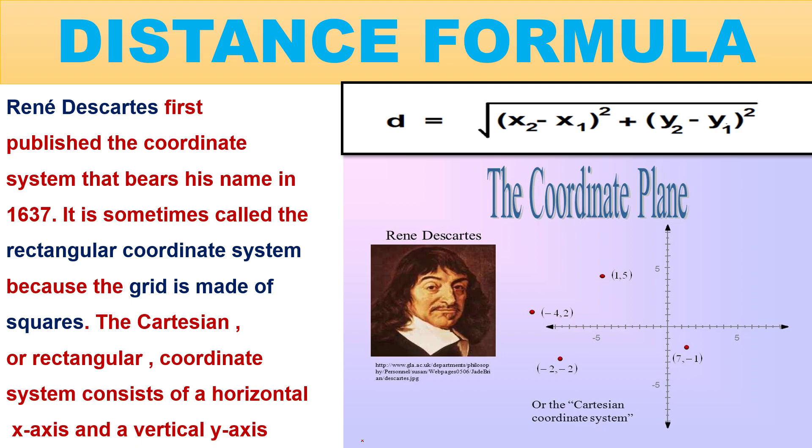You know, in class 9th, a chapter was Coordinate Geometry. But René Descartes first published the coordinate system that bears his name in 1637. It is sometimes called the Rectangular Coordinate System because the grid is made of squares.